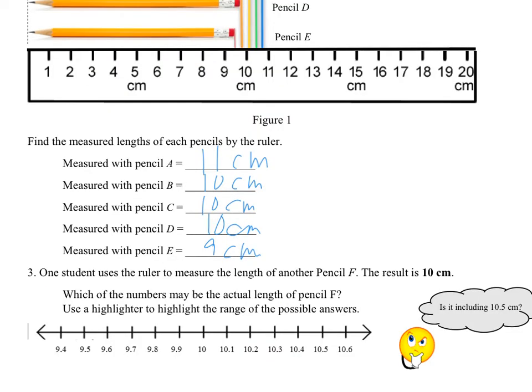So for part 3, our students use a ruler to measure the length of another pencil F. So we have a new pencil for the F, and the result is also 10cm. Which of the numbers may be the actual length of the pencil F as well? So let's use a highlighter and then find out the range of a possible answer.